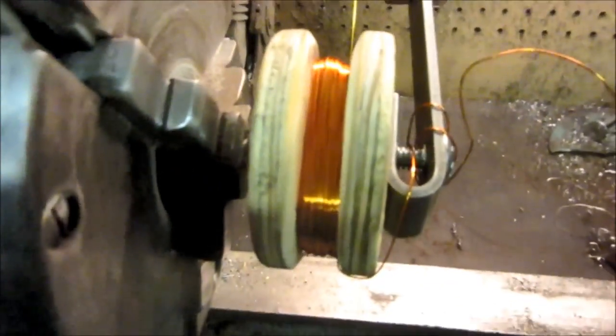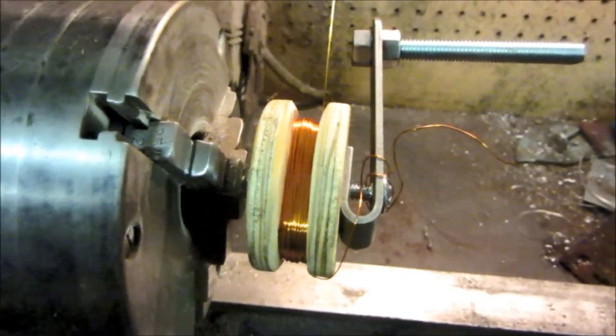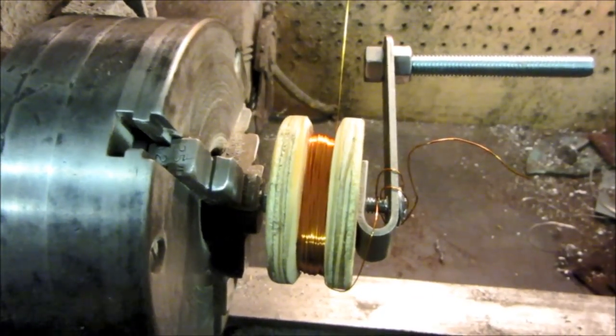Okay, that's 215 wraps of magnet wire onto the little coil winding form. Now I'll take it over there to the bench and try to get it off of there without getting it all disorganized.